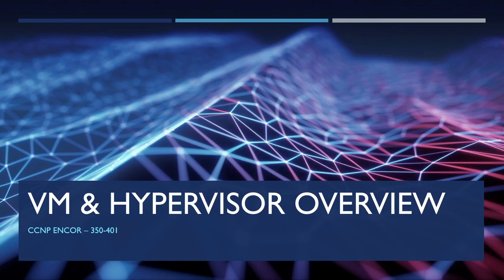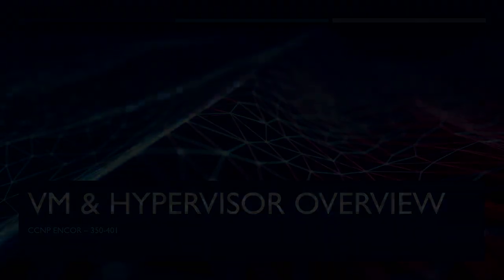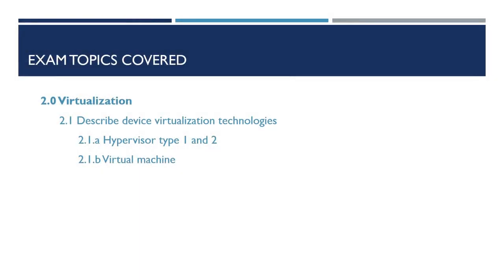Hey guys, in today's video we're going to be taking a look at different virtualization technologies including virtual machines and containers. This video forms part of the CCNP Enterprise Core exam series 350-401. The exam topics covered as part of this video are 2.1a, which is to describe hypervisors type 1 and type 2, and 2.1b, which is to describe a virtual machine.